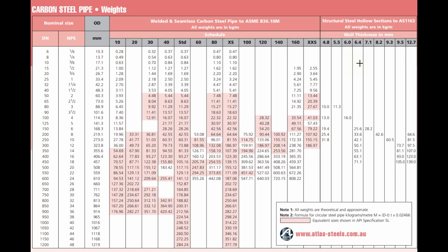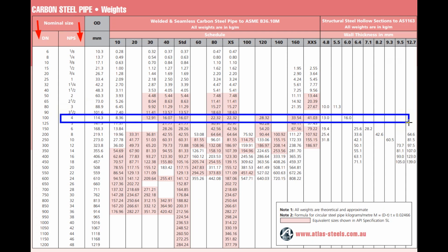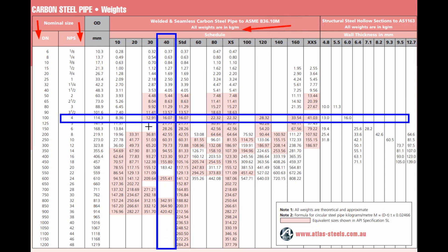This is a table for carbon steel pipe weight — you can also select the empty pipe weight from this table. The first column is for the DN system in millimeters and the second column is the NPS system in inches. Our pipe size is 4 inch, so we select the 4 inch row. The pipe schedule is 40, so we select the column for schedule 40. The unit of weight in this chart is kilogram per meter, meaning the weights given are for 1 meter length of pipe. For a 4 inch schedule 40 carbon steel pipe, the weight for 1 meter length is 16.07 kilograms.